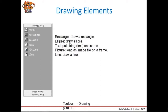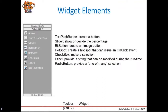Before starting the program, we will check the different items in the toolbox that we can use to create the HMI part. The first section, Drawing, has items that will be defined during development and cannot be changed during runtime. The items are: Rectangle, to draw a rectangle on the screen; Ellipse, to draw an ellipse or circle; Text, to put a string or text on the screen; Picture, to load an image file on a frame; and Line, to draw a line.